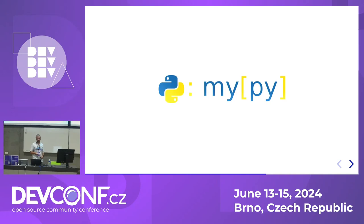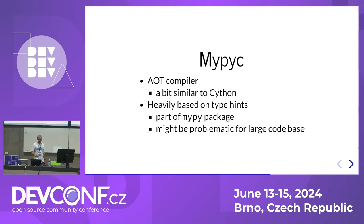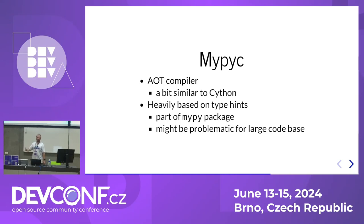The next project is MyPy. The primary goal of MyPy is to check type hints in Python — something different from what we're doing here. But the MyPy project contains the MyPyC tool, which is an ahead-of-time compiler similar to Cython. It's heavily based on type hints. Cython can compile any Python code; MyPyC cannot. If you don't use type hints everywhere, MyPyC won't be able to compile your code, so for a larger project it can be problematic.